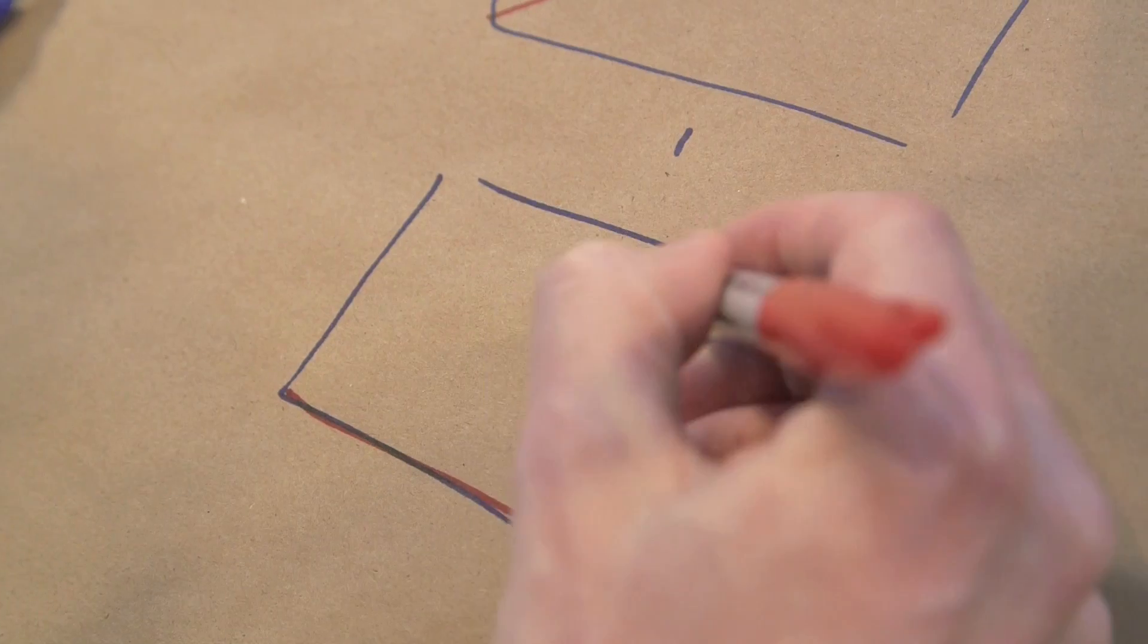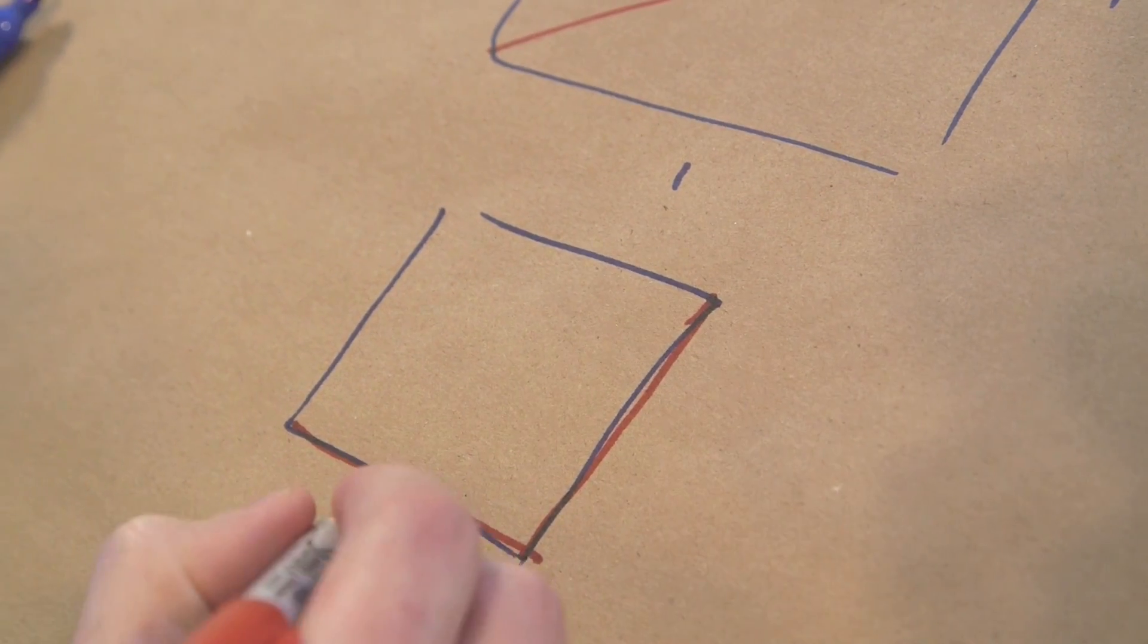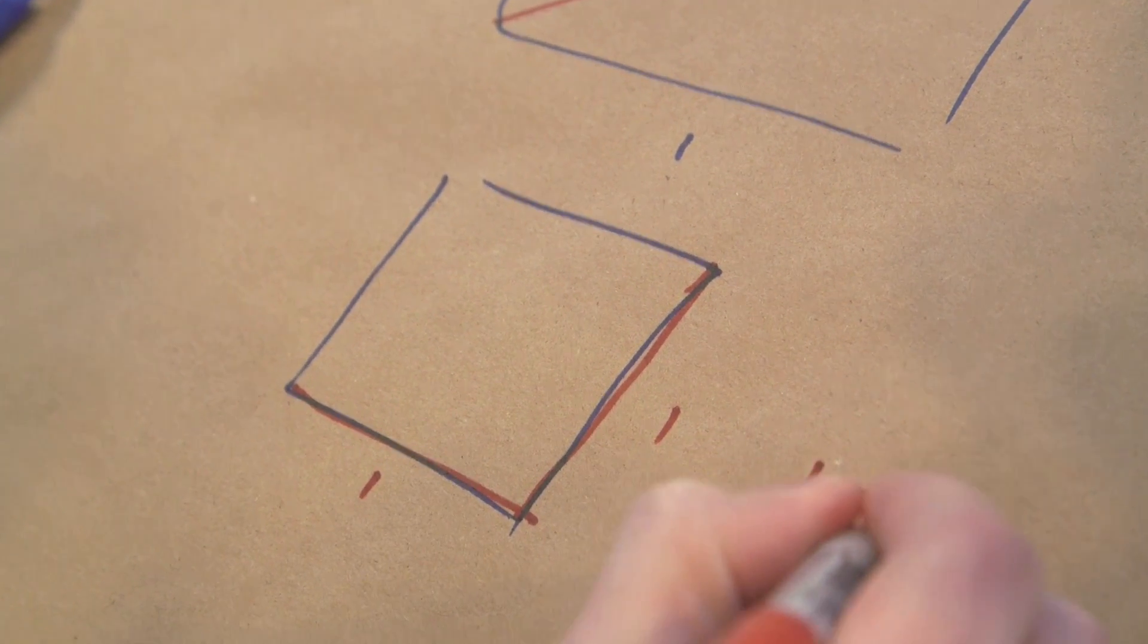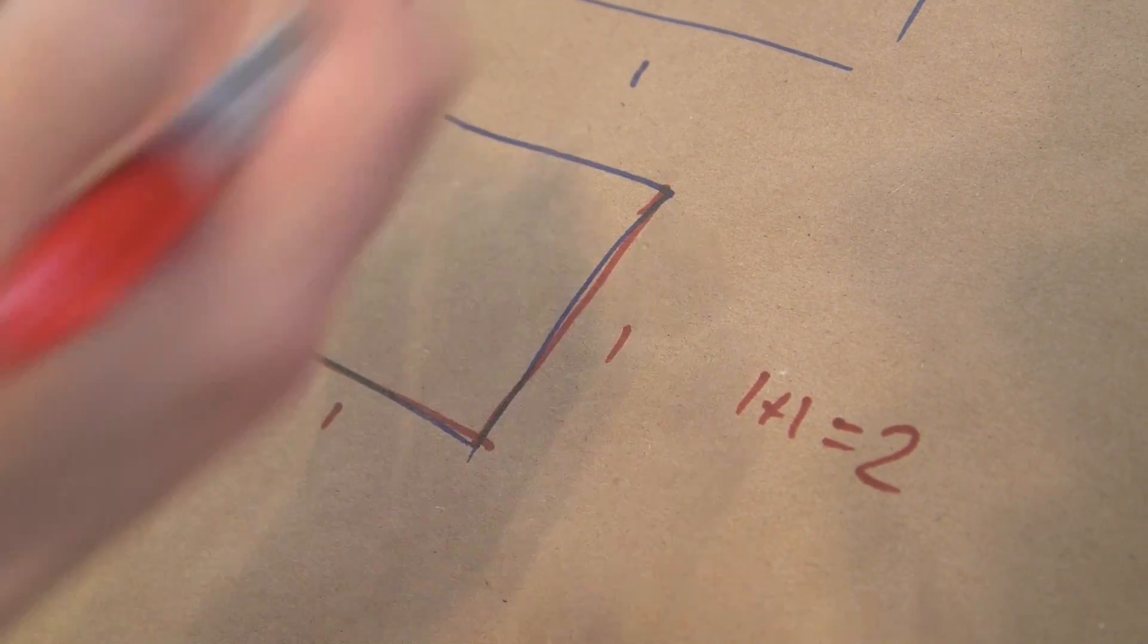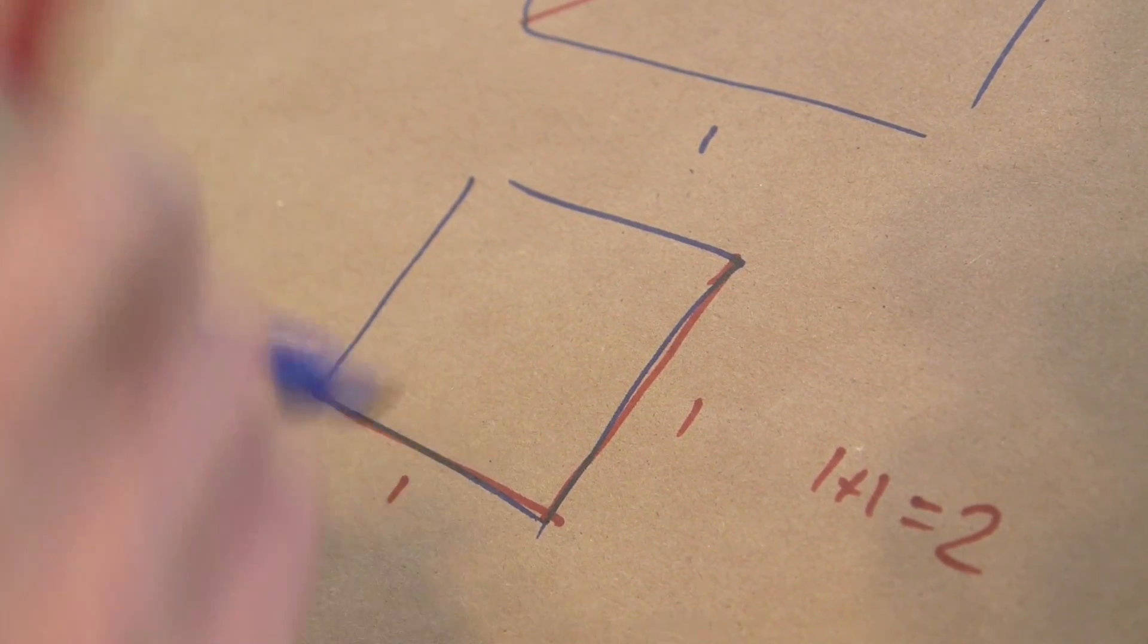So I'm going to take this side of the square and this side of the square, and that's 1 plus 1. So 1 plus 1 is 2. Okay, well I'm not at square root of 2 yet, but I'll get there, don't worry.